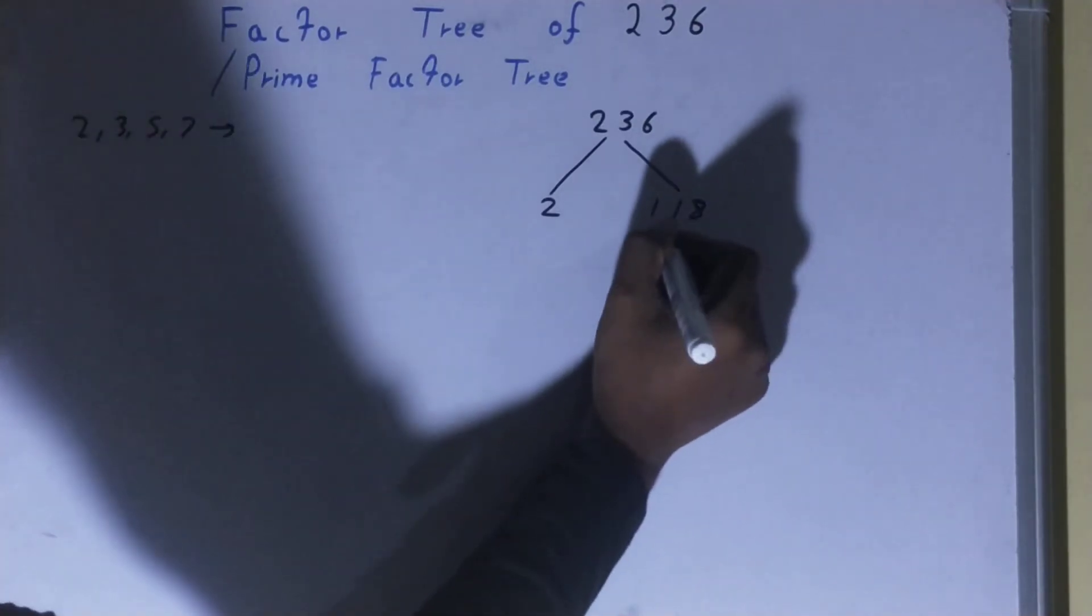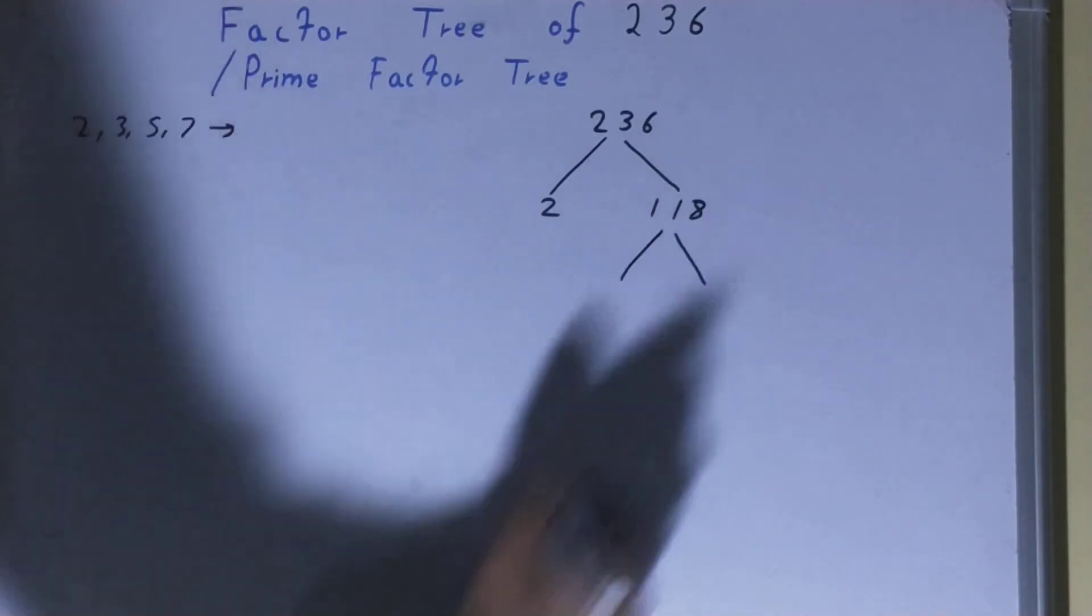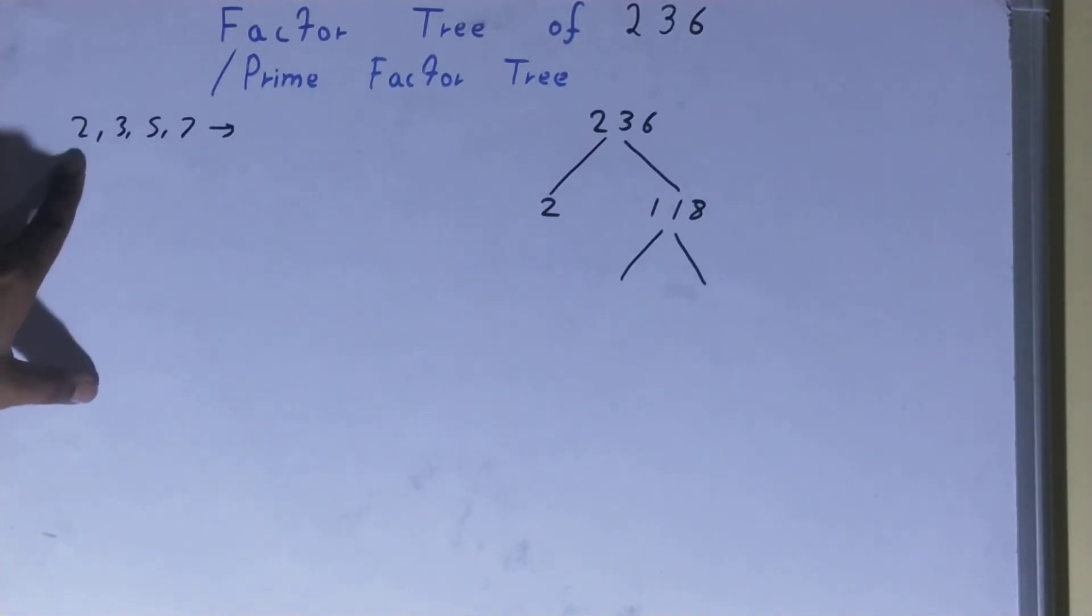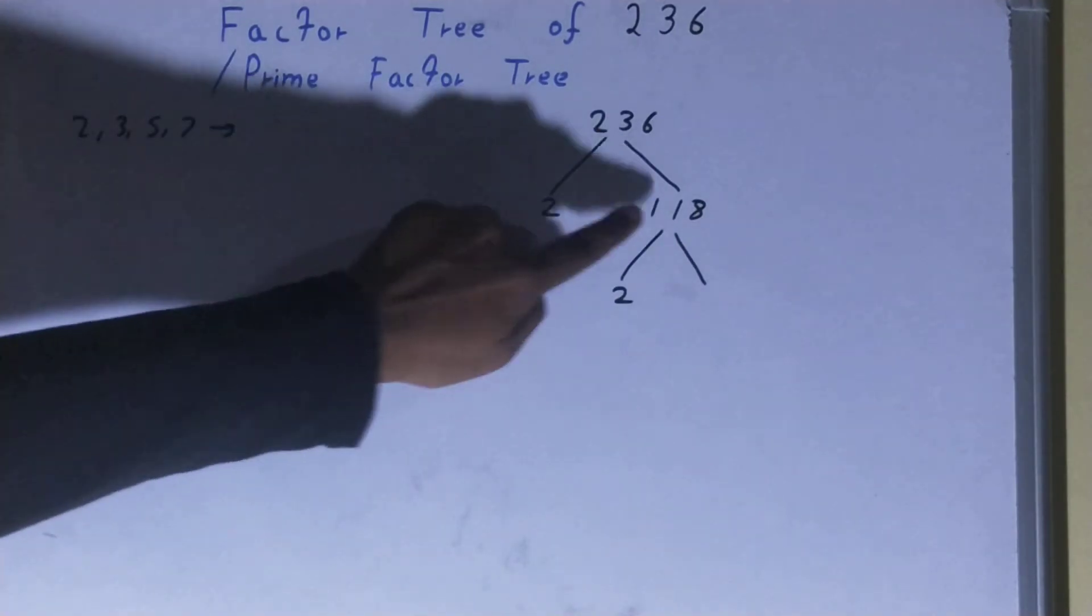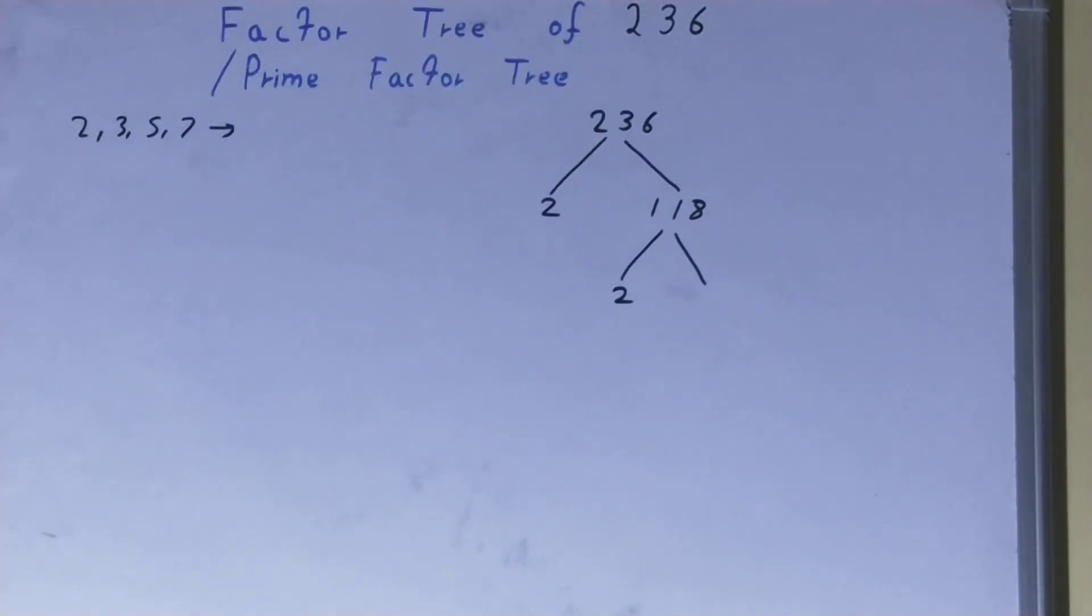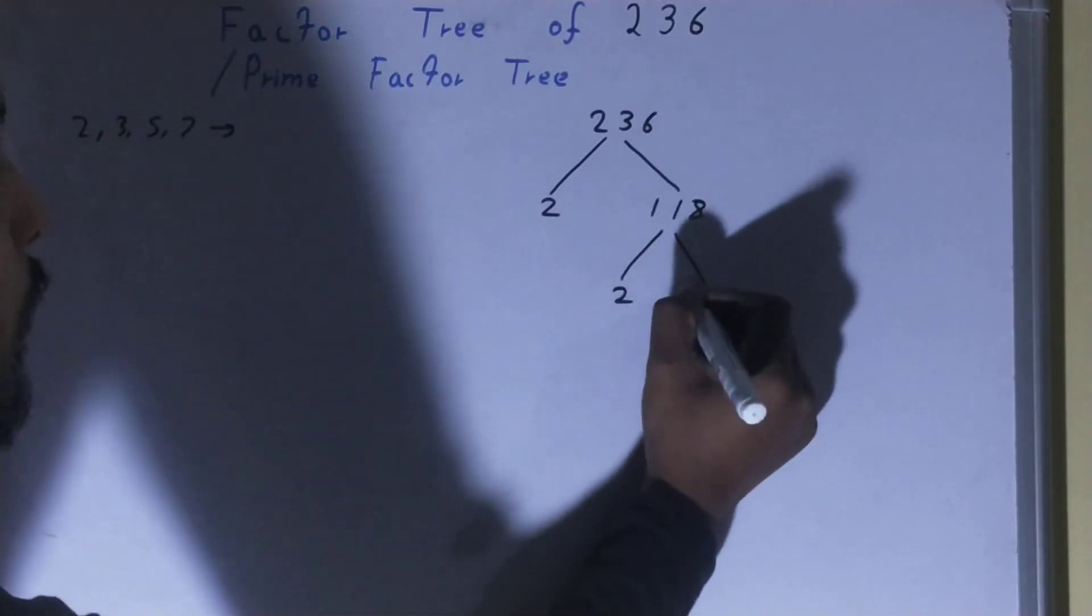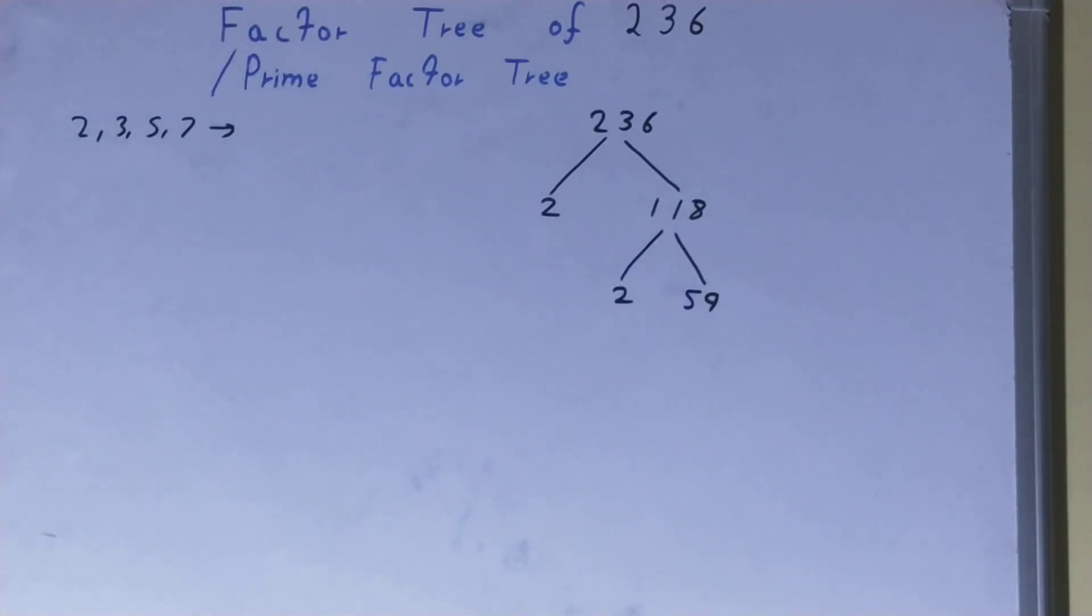So we'll factorize it further on and we'll check: is the number 118 divisible by 2? Yes. So one of the numbers will be 2, the other will be whatever we get after dividing. So 118 divided by 2, what we get? We get 59.